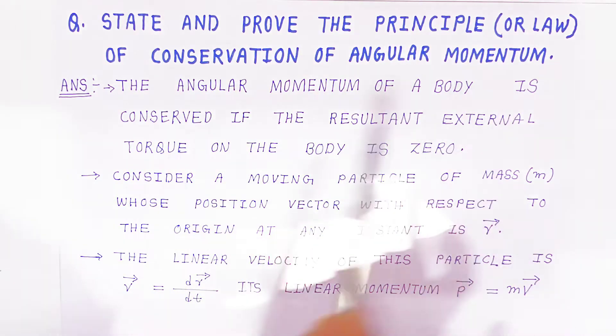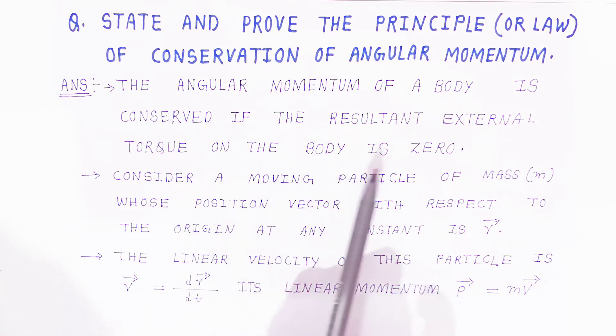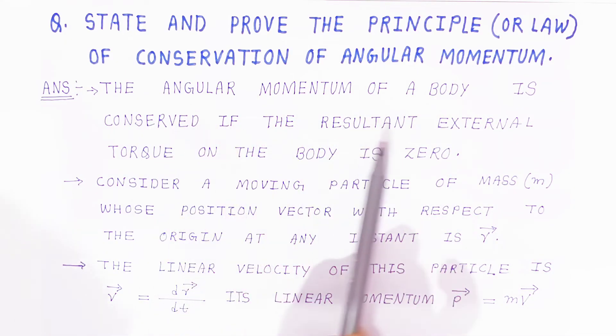Angular momentum of a body is conserved if the resultant external torque on the body is zero. Then we can say angular momentum is conserved. The angular momentum of a body is conserved if the resultant external torque on the body is zero.